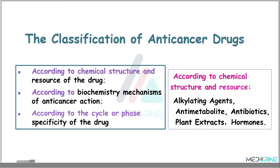When discussing the pharmacology of anticancer drugs, we have to classify these drugs. Anticancer drugs are classified according to the chemical structure and source of the drug, according to the biochemical mechanisms of anticancer action, and lastly, according to the cycle or phase specificity of the drug.